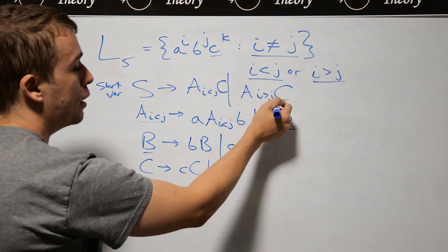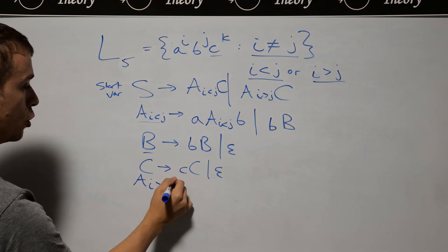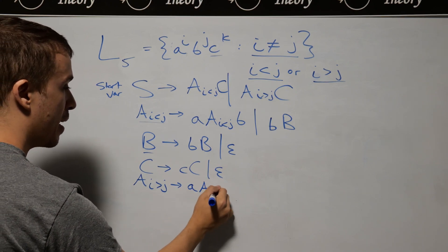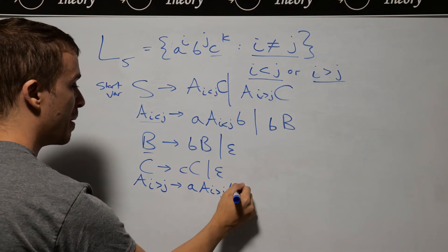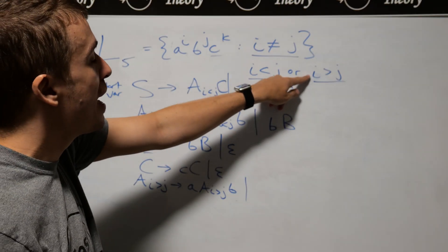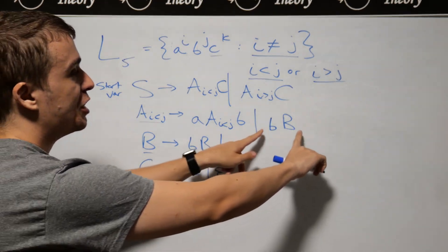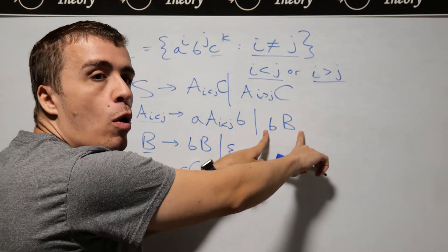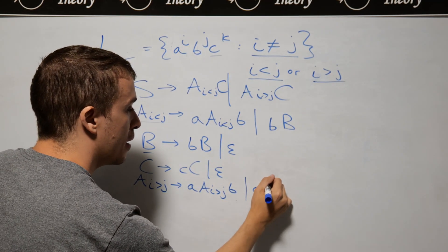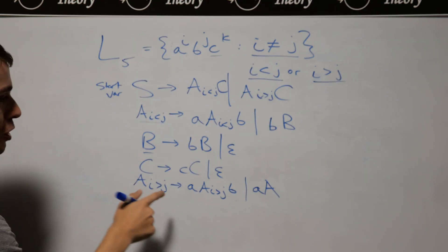Now let's deal with the i > j case. It's going to be a very similar idea. A_{i>j} will be A A_{i>j} B. But now, if we have more A's than B's, I need a way to generate additional A's. Similarly, I must have at least one more A generated. I'll have a variable - maybe I'll call it X so it's not hard to distinguish. Here I'm generating at least one more A.